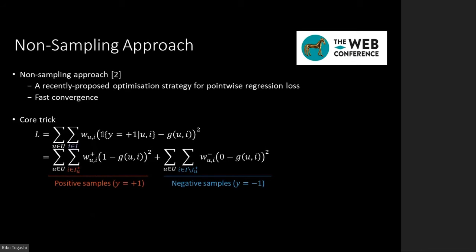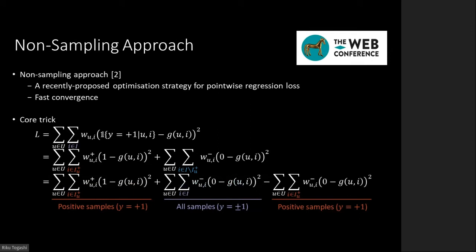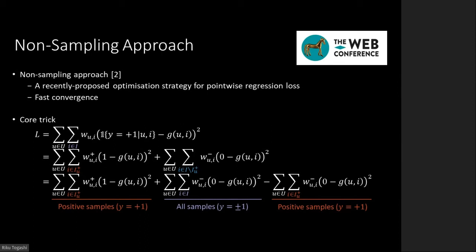Before explaining our method, we introduce the recently proposed non-sampling approach. The non-sampling approach is an efficient optimization strategy for the pointwise regression loss. It achieves fast convergence without sampling for users or items but enables stochastic optimization. The non-sampling approach transforms the sum of pointwise regression losses to achieve efficient computation. The sum of the pointwise loss over the whole data can be separated into positive and negative samples. We can rewrite the sum of losses over negative samples as the difference between those of all samples and positive ones. By invoking this trick and removing the term for negative samples, the objective function can be expressed by three sums over positive and all samples.